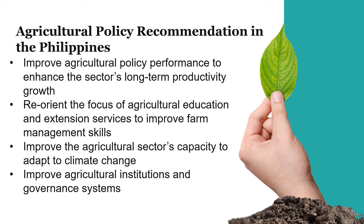The last topic is agricultural policy recommendations in the Philippines. First, improve agricultural policy performance to enhance the sector's long-term productivity, which is intended to refocus the policy package to improve food security, refocus agrarian land policy from land distribution to securing property rights through land governance reform, focus budgetary support on long-term structural reform, and reorient the agricultural knowledge system. Second, reorient the focus of agricultural education and extension services to improve farm management, adopting a holistic approach to risk management with a policy focus on catastrophic risk, and assess insurance and cash transfer schemes that encourage adaptive decisions.